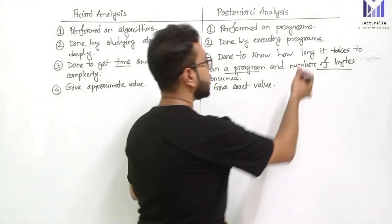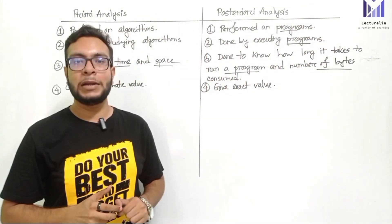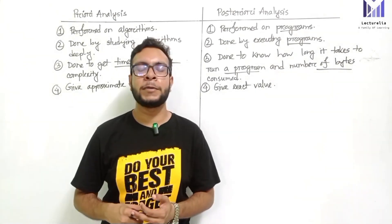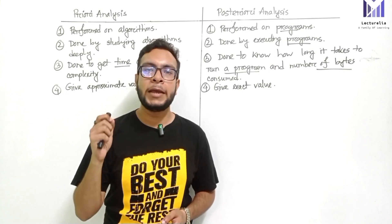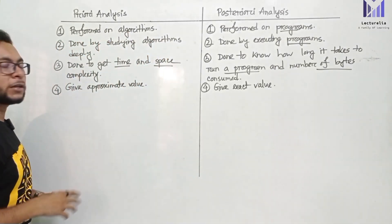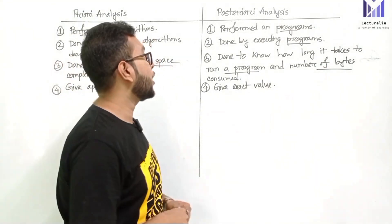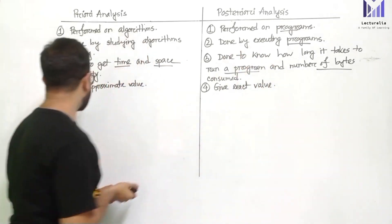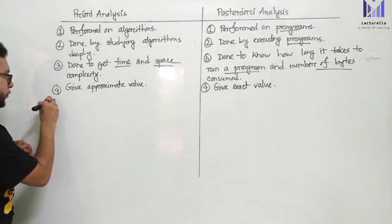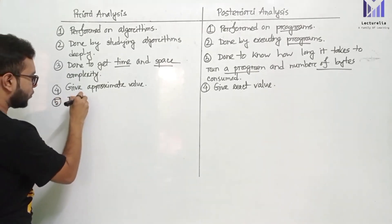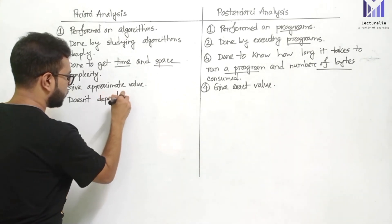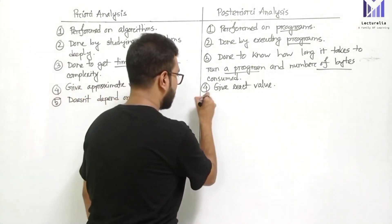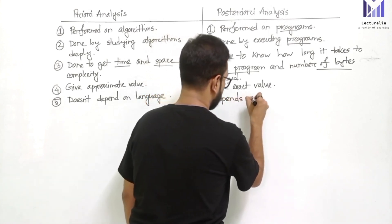Programs must be written in specific languages. We have to write in C, C++, Java, or Python, based on what the program and criteria are. The main point is that prior analysis does not depend on the language — it depends on the algorithm — whereas posterior analysis is language-dependent since the algorithm must be implemented in a program.